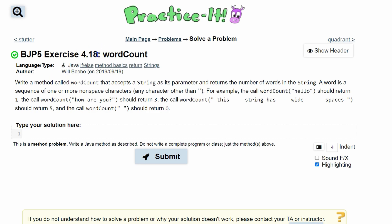Practice-It Exercise 4.18: wordCount. We need to write a method called wordCount. We're going to have a public static method that returns an integer. It's called wordCount and takes a String as a parameter. We're just going to title it lowercase string, and then we're going to be inside of here.